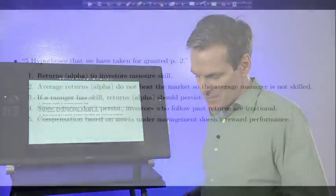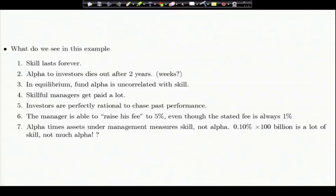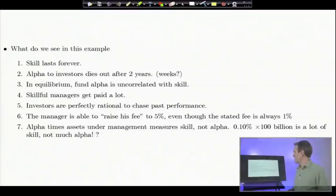Compensation based on assets under management doesn't reward performance—well, it does in this case. Summary: skill lasts forever. Alpha to investors dies out after two weeks. Alpha is uncorrelated with skill in equilibrium. Skilled managers get paid a lot, even though investors aren't getting alpha in equilibrium. Investors are perfectly rational to chase past performance. What's really going on is the manager should raise his fee to 5% rather than charge 1% and index the rest. But that's the way he does it—by bringing more assets under management. Alpha times assets under management is the right measure of skill.